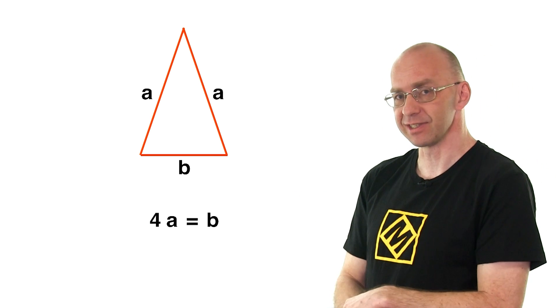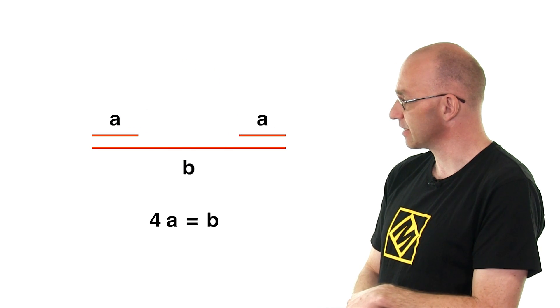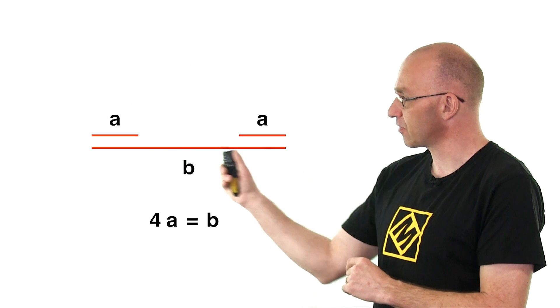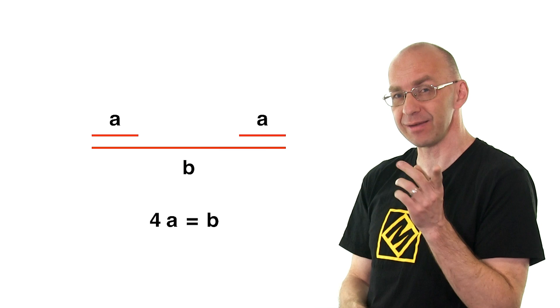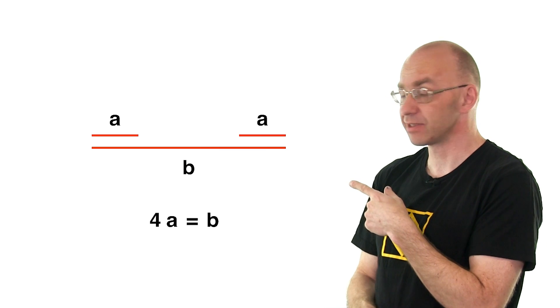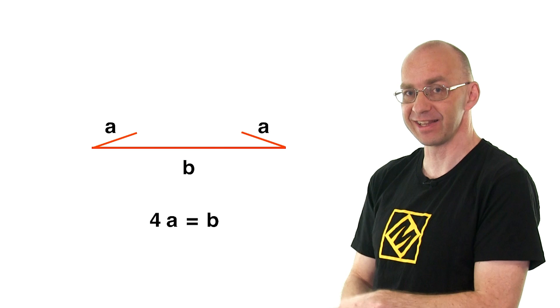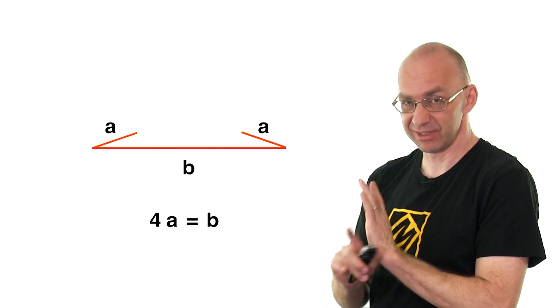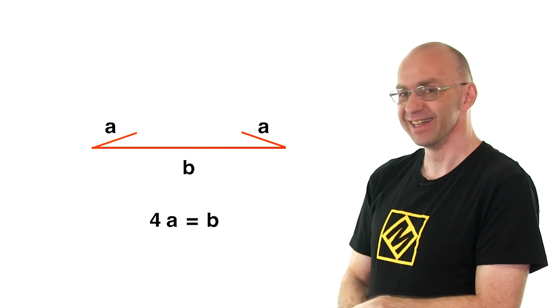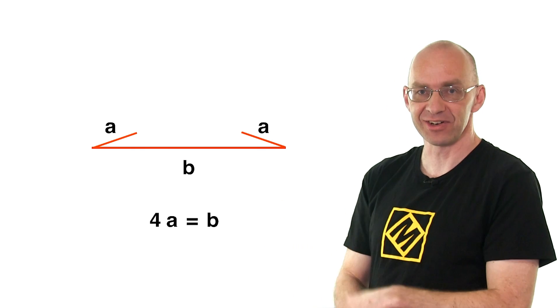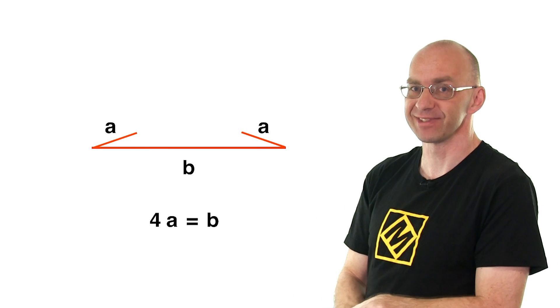And actually we can do this in pictures here. So what this says is we've got like A, and we've got A, and B is four times as long as A. And it's pretty obvious you can't make any triangle out of anything like this. So just forget about it. It's a big no-no. It's not going to work. So it's pretty wrong.